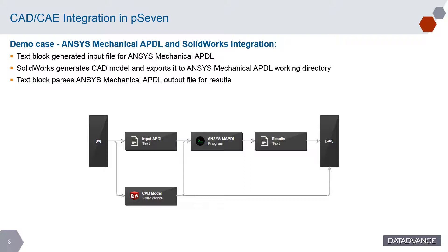The workflow looks like this. First, the text block generates an input file for ANSYS Mechanical APDL. Then the SOLIDWORKS direct integration block generates a CAD model and exports it to the ANSYS Mechanical APDL working directory. After that, the program block generates an output file and another text block parses it and outputs the results.